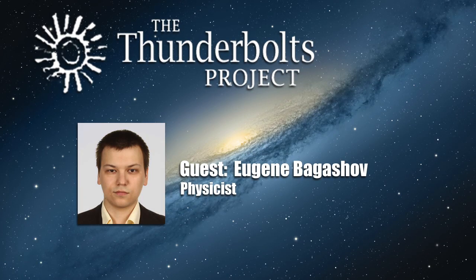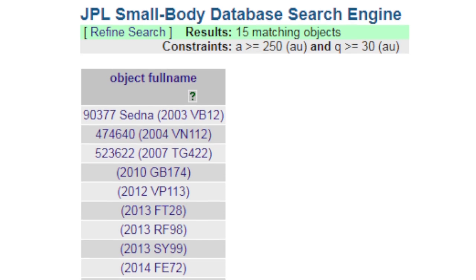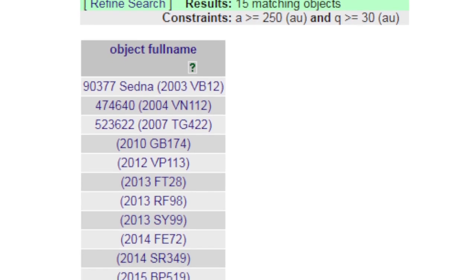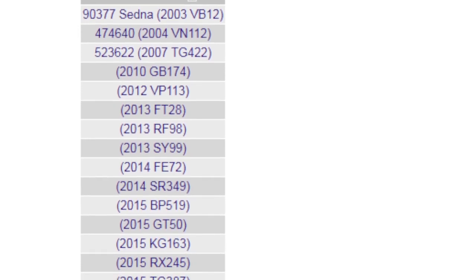So let us now examine the hypothesis proposed by Batygin and Brown. They turn our attention to a class of relatively recently discovered objects that have perihelion distance of over 30 astronomical units, which is the orbit of Neptune, but semi-major axis of over 250 astronomical units.